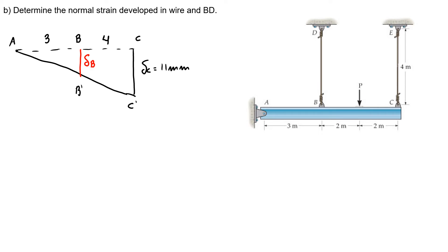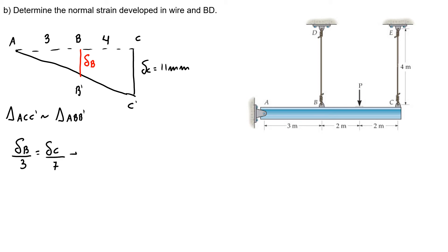If you look, we have two similar triangles. The first one is triangle A, C, C-prime, which is similar to triangle A, B, B-prime. Knowing this, the displacement in B over 3 has to be the same as the displacement in C over 7. So the displacement in end B equals the displacement in C times 3 over 7.